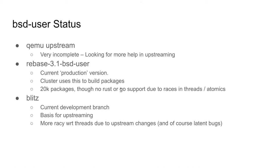The blitz branch is the current development branch used for upstreaming. I make changes needed for the upstream process in blitz and do limited bug fixes back to the rebase-3.1 branch. Blitz is also racier — due to changes in QEMU making it more aggressive about retiring memory, races happen more often than in 3.1. I'd guess maybe 9,000–10,000 ports work in blitz, and the problem packages also include libtool, which is the basis for a large number of ports.